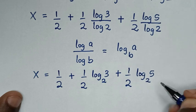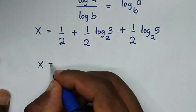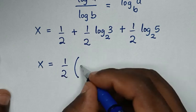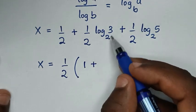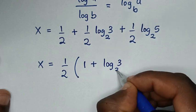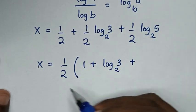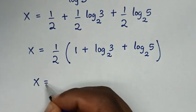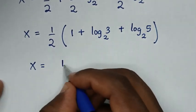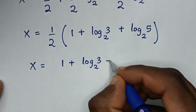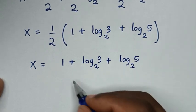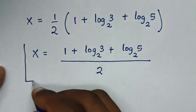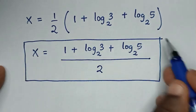So x equals 1/2 plus 1/2 times log of 3 base 2 plus 1/2 times log of 5 base 2. Taking 1/2 as common factor out of the bracket: 1/2 divided by 1/2 is 1, log of 3 base 2 divided by 1/2 is log of 3 base 2, and log of 5 base 2 divided by 1/2 is log of 5 base 2. So x equals 1 plus log of 3 base 2 plus log of 5 base 2, all over 2. This is the final answer.